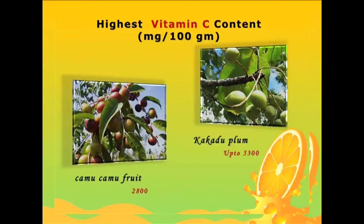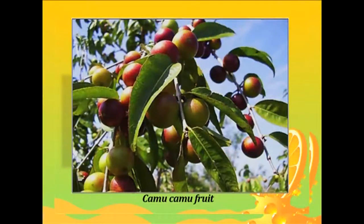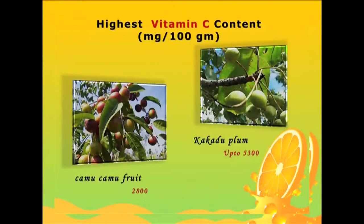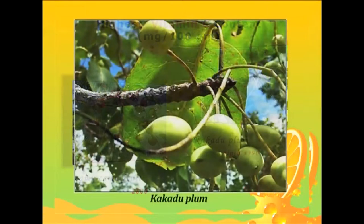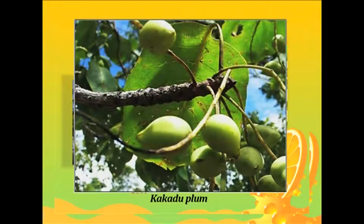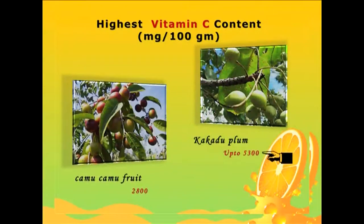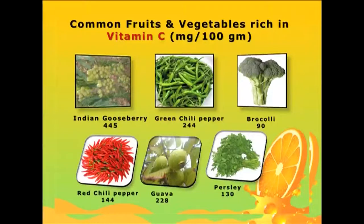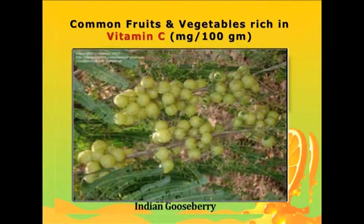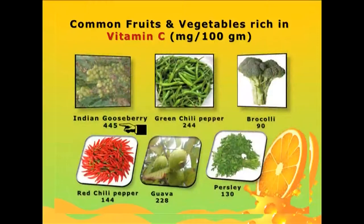These are the fruits that hold the world record for containing the highest amount of vitamin C. The Camu Camu fruit of the Amazon rainforest contains about 2800 milligrams of vitamin C per 100 grams of fruit mass, while the Kakadu plum of Australia has been reported to contain up to 5300 milligrams of vitamin C per 100 grams of fruit. Indian fruits rich in vitamin C include Indian gooseberry, popularly known as Amla, which contains about 445 milligrams of vitamin C per 100 grams.